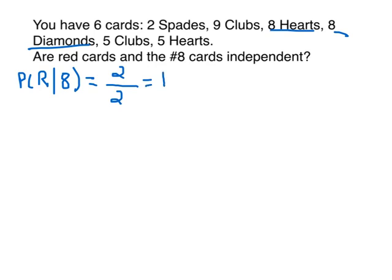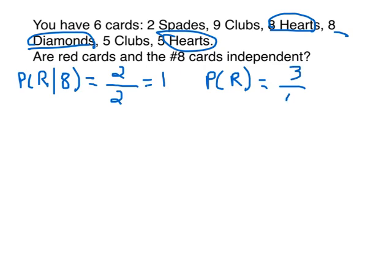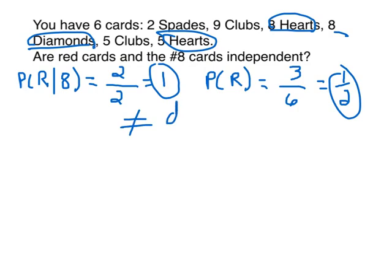Now I compare this to the probability without the condition eight — just the probability of getting a red card. In this situation we have three red cards: the eight of hearts, the eight of diamonds, and the five of hearts. Three out of a grand total of six cards is one-half. As you can see, these two numbers don't equal — the conditional probability does not equal the regular probability. Since they don't equal, this is dependent.